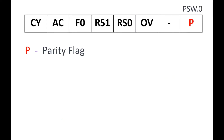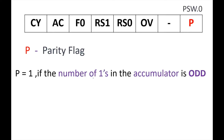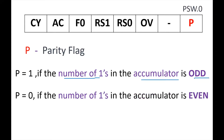The parity flag corresponds to PSW.0. It indicates how many ones are in the accumulator. The parity flag becomes 1 if the number of ones in the accumulator is odd — for example, one, three, five, or seven ones in an 8-bit accumulator. The parity flag is 0 if the number of ones is even — for example, zero, two, four, six, or eight ones.